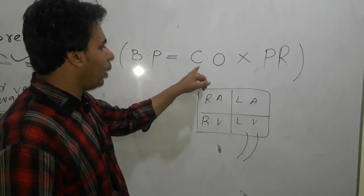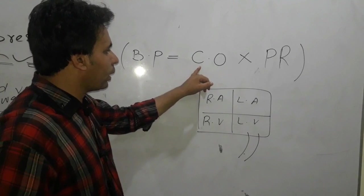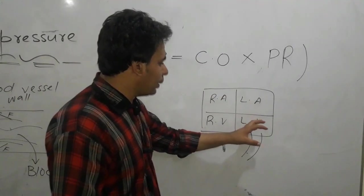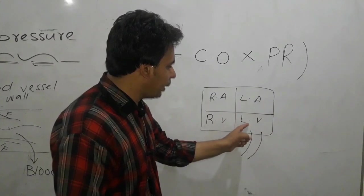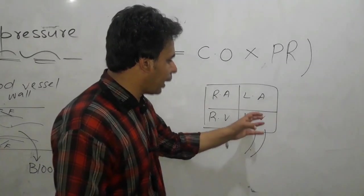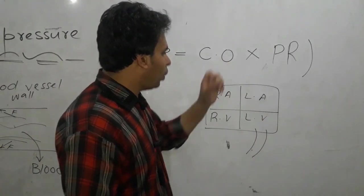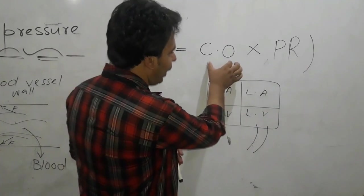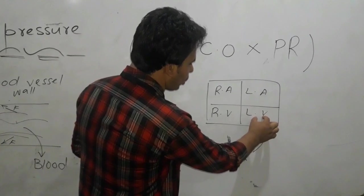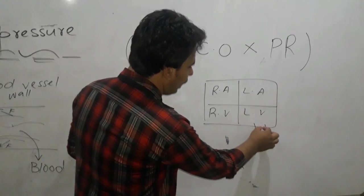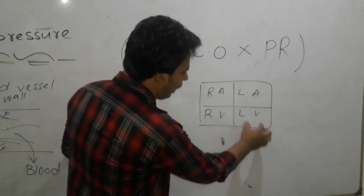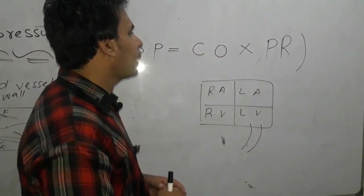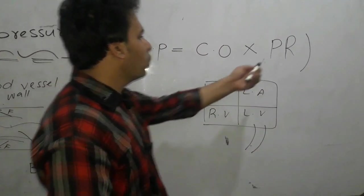Now you have to know first about cardiac output. What is cardiac output? The blood which is taken out or pushed by your left ventricle to the aorta at the time of its contraction is called cardiac output.